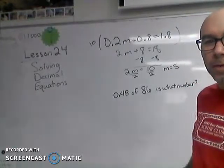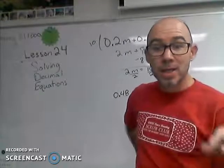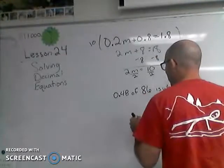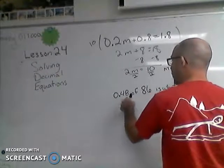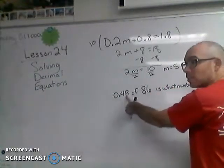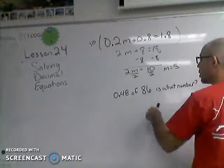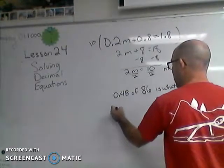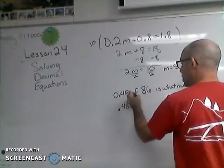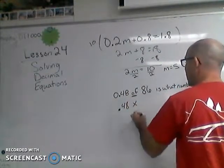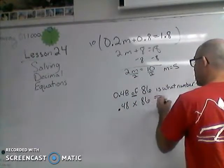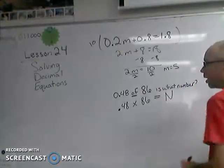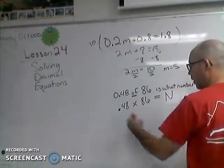Another problem would be finding decimal parts of numbers. Here we're going to do some translating, and then we'll do our little trick by multiplying through by a whole number - power of 10. And that is: 0.48, or 48 hundredths of 86 is what number? I can leave this as a decimal and just convert some of these things. 'Of' means multiply, 'is' means equals, and 'what number' we'll call N. So there's a problem.